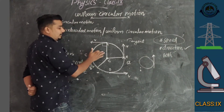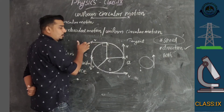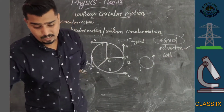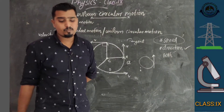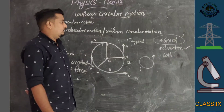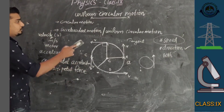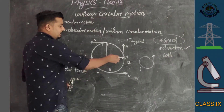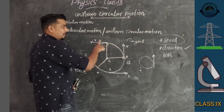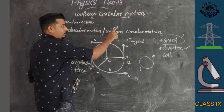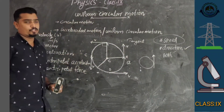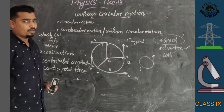The direction of acceleration and velocity are mutually perpendicular. So in uniform circular motion, at every point the object is accelerated. Therefore, uniform circular motion is called accelerated motion.